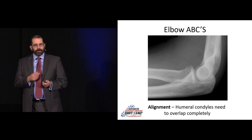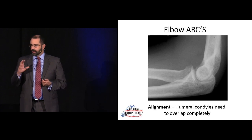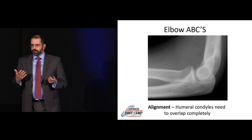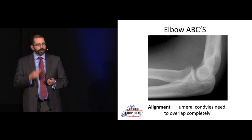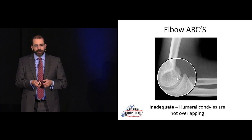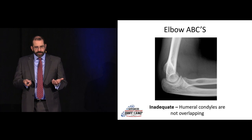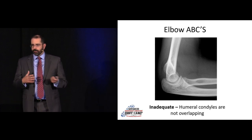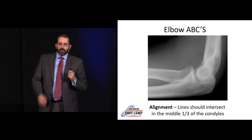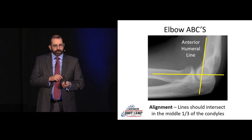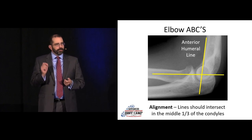Moving up to the elbow: in terms of alignment, the condyles should be overlapping in a nice figure-eight. If the patient is oblique and they're not lined up, you can miss fat pads — they're just as important in adults as in kids. You need a true lateral. Here's an example where one condyle is up and one is down — technically not adequate — yet this person has massive anterior and posterior fat pads, so something is clearly going on.